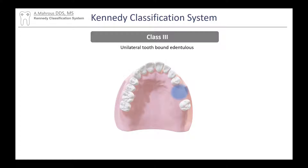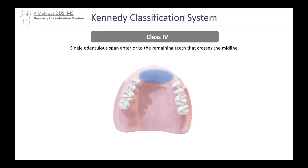Class 3 is unilateral again, just like Class 2, but this time it has teeth on both sides — so it is a bounded edentulous area on one side of the arch. Class 4 is an edentulous area that is anterior to the remaining teeth and crosses the midline, and that's important.